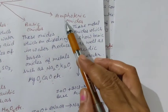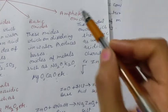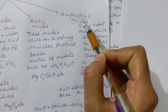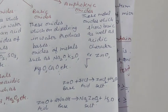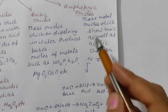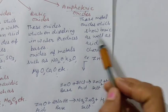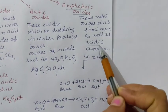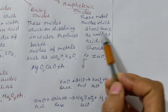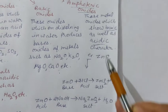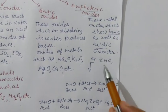Next one is amphoteric oxides. Amphoteric oxides are very important. Those are metallic oxides which show basic as well as acidic character. Both types of character, they are called amphoteric oxides.